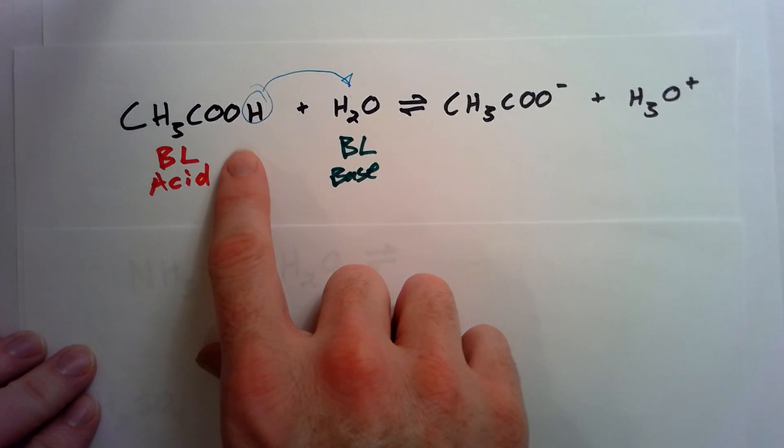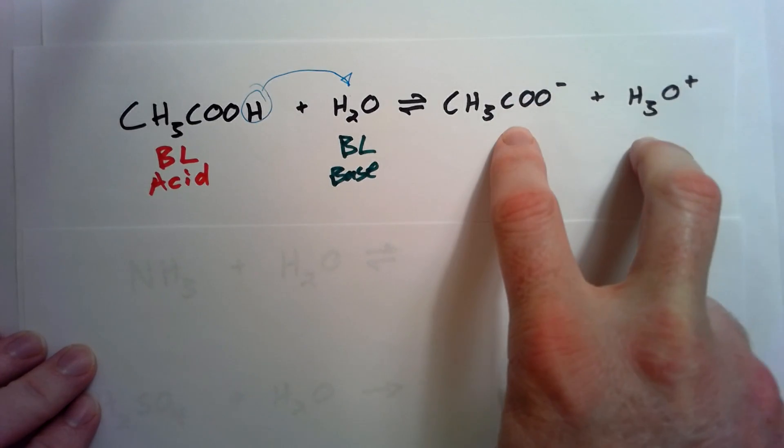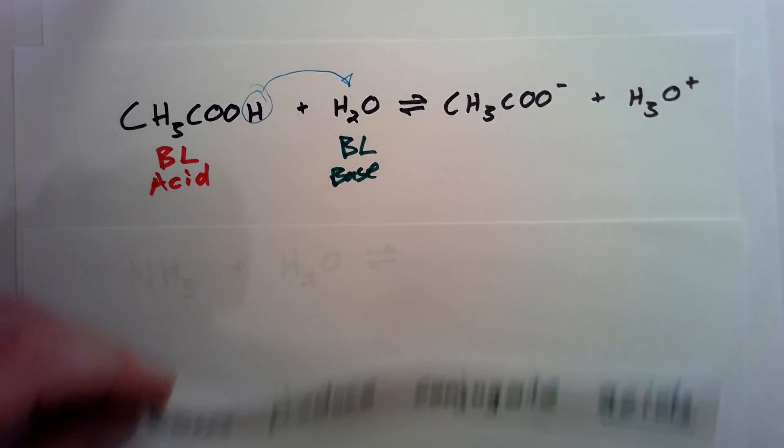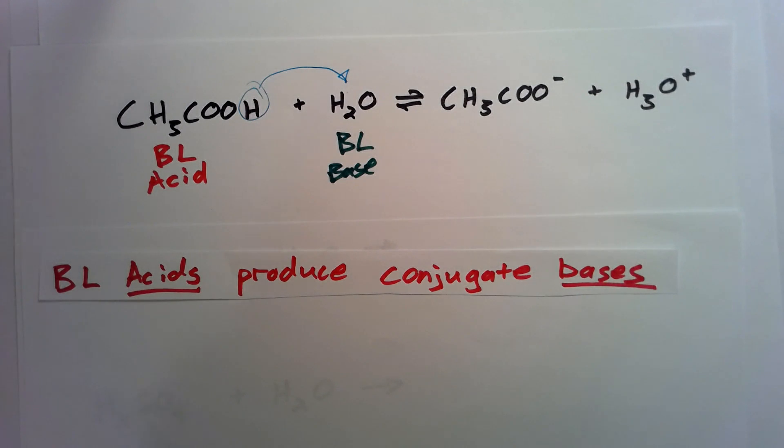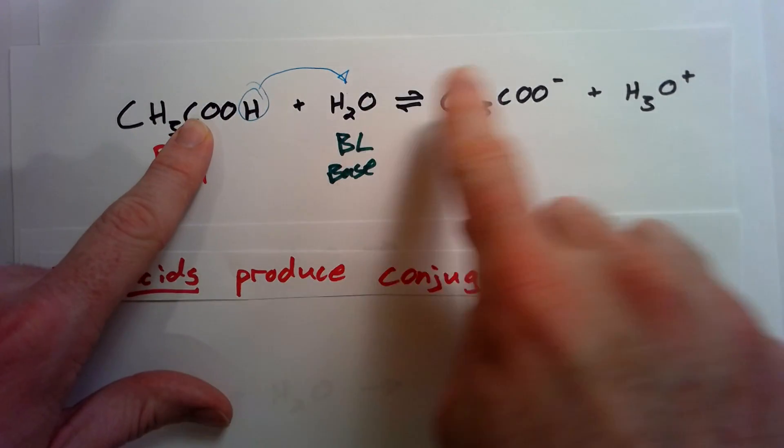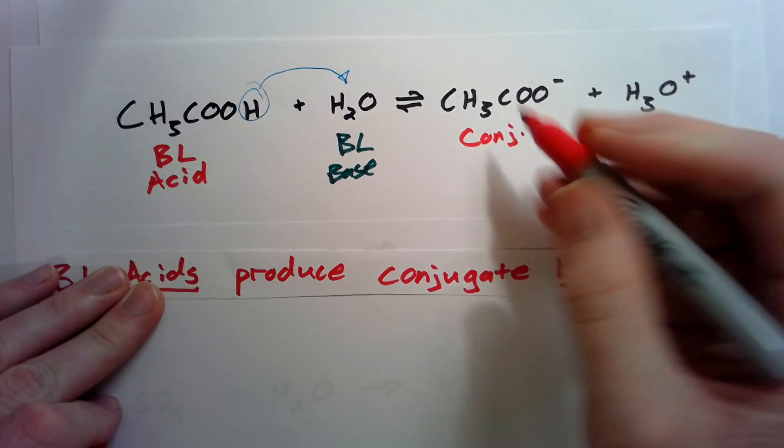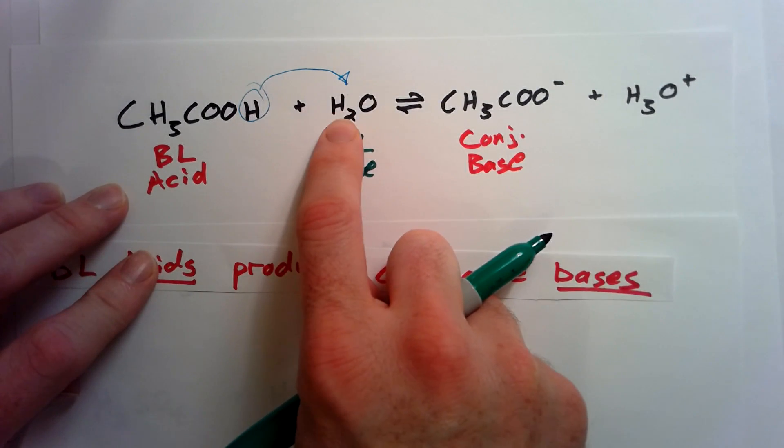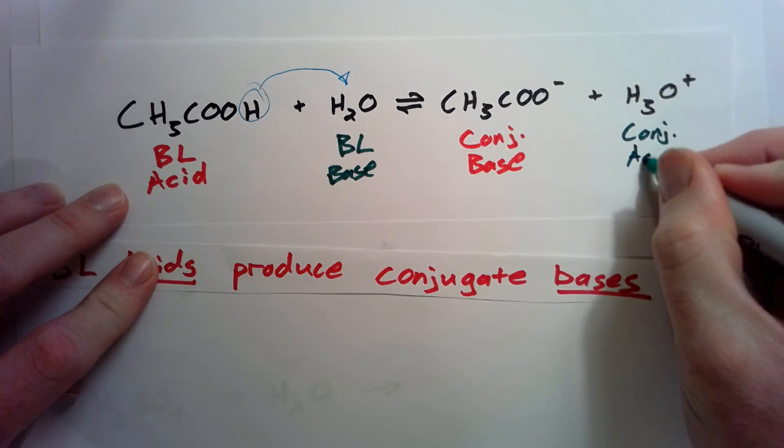Now, the things on the right, what these things became. We have to determine what these things are. These things are called conjugates. Anything on the right has a conjugate definition. A conjugate Bronsted-Lowry acid will turn into a conjugate base. Let me explain what I mean here. This Bronsted-Lowry acid has given away this proton to water, and it has become this, the conjugate base. And here, this water has received a proton, so it has become H3O+. It has become the conjugate acid.